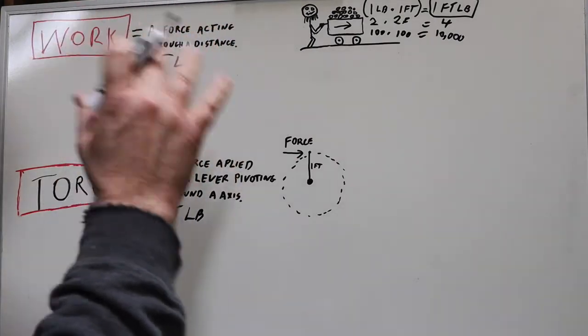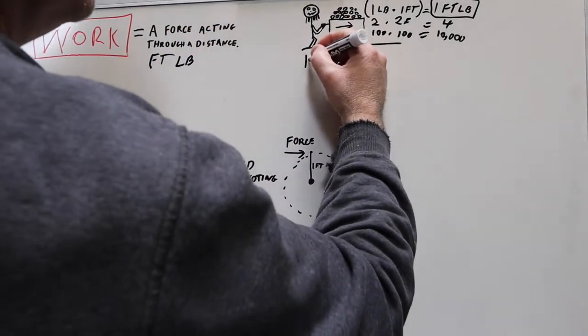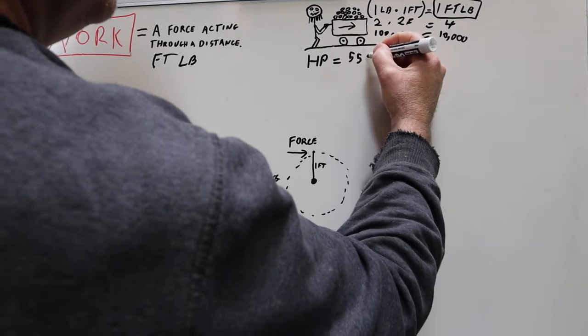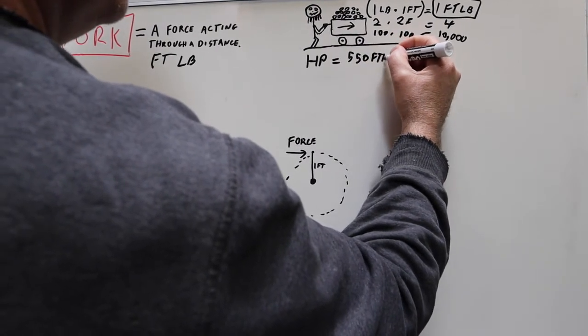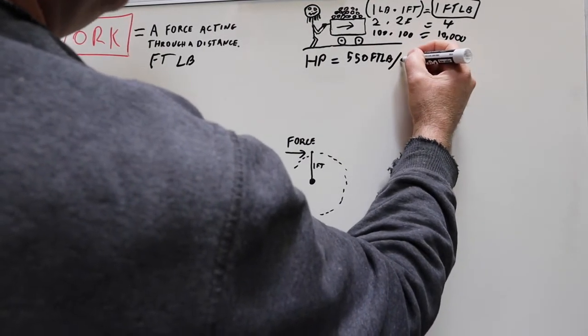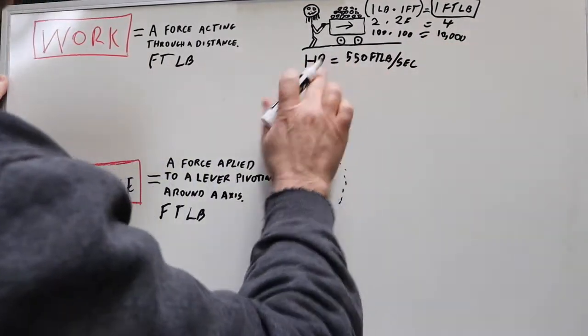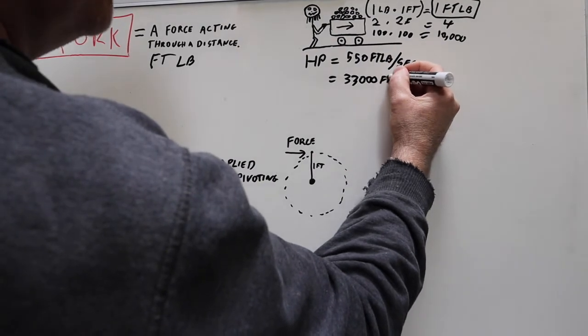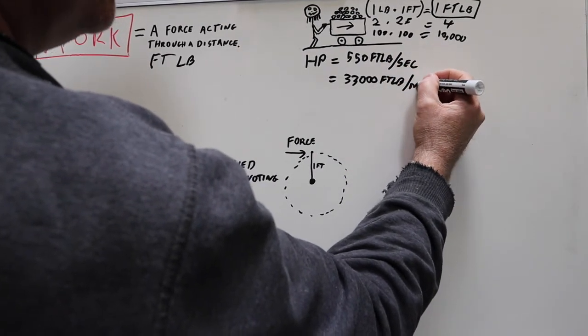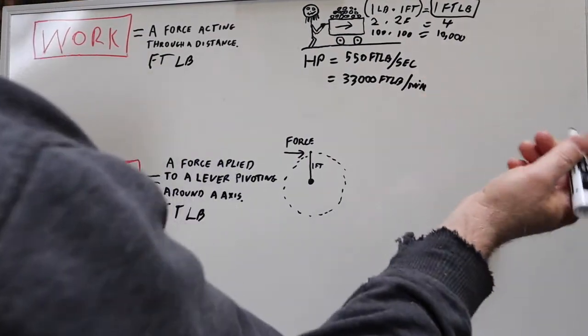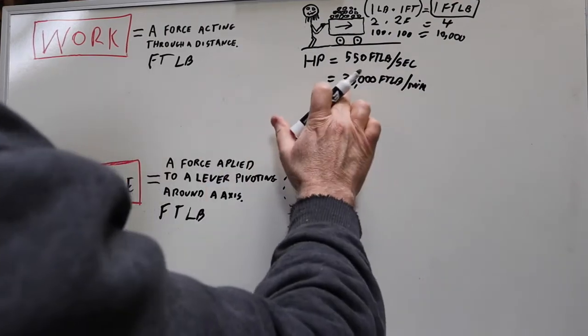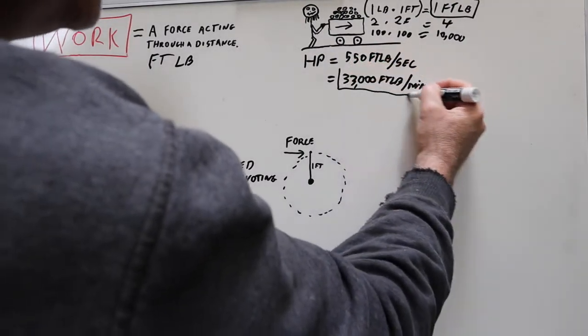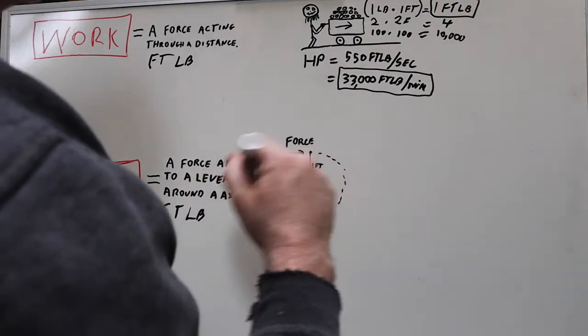So horsepower is defined a couple different ways. The most common, and the one we're going to use here, is: a horsepower equals 550 foot-pounds per second, or if you multiply that by 60 you'll get 33,000 foot-pounds per minute. Now seeing as we're all motorheads here, or at least I am, we're going to use this one because normally we measure the RPM of our engines in revolutions per minute.